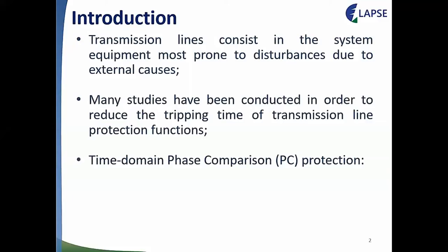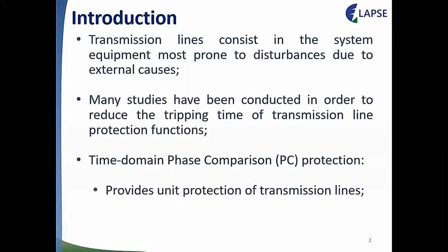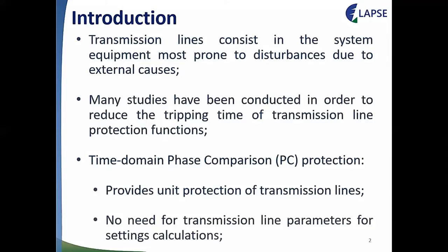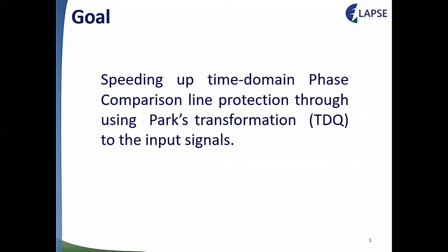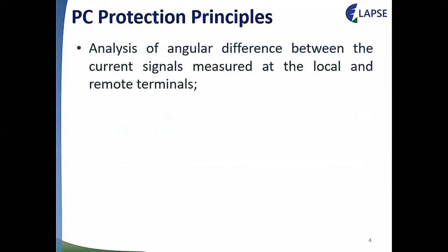Regarding time domain protections, this function is a high-speed one because it eliminates the need for phasor analysis. The phase comparison (PC) protection is an example of a protection that may be implemented in the time domain. The PC provides unit protection of transmission lines with no need for transmission line parameter setting calculations required, which is a key potential of PC protection.